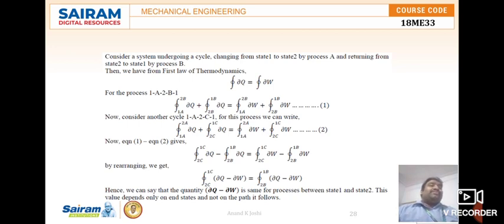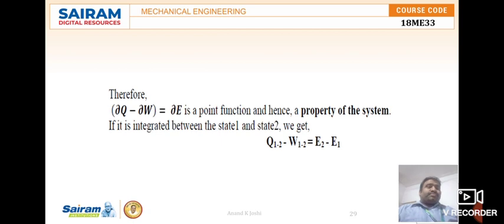By observing this figure, we wrote Q₁₋₂ minus W₁₋₂ equals E₂ minus E₁. Here we wrote E₂ minus E₁, not E₁₋₂, because E is a property of the system and it is an exact differential.